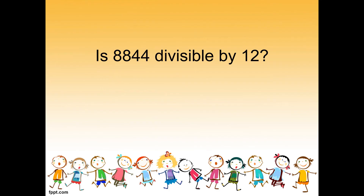Next question: is 8,844 divisible by 12? First check divisibility by 3: 8 plus 8 plus 4 plus 4 equals 24. 24 divided by 3 equals 8 — yes. Now check divisibility by 4: last two digits are 44. 44 divided by 4 equals 11 — yes. Both pass, so 8,844 is divisible by 12.